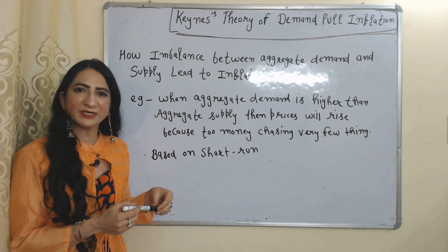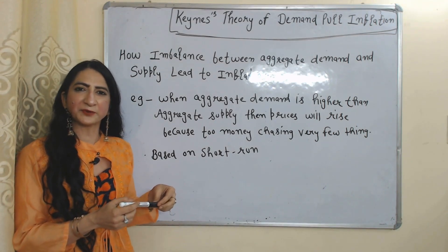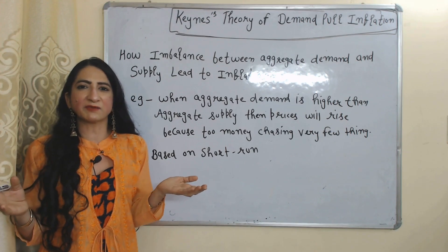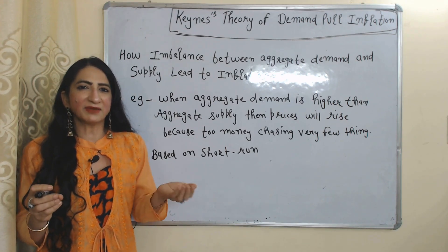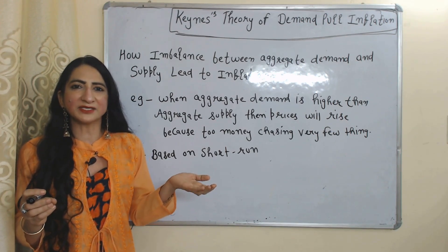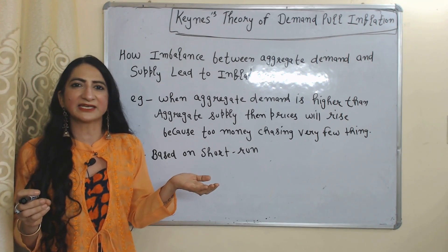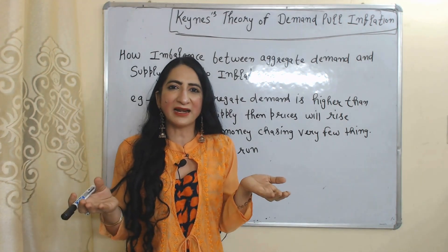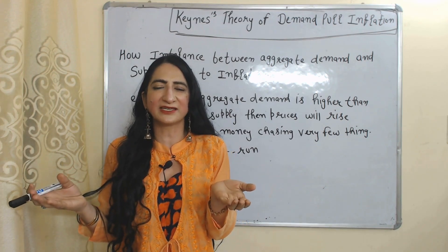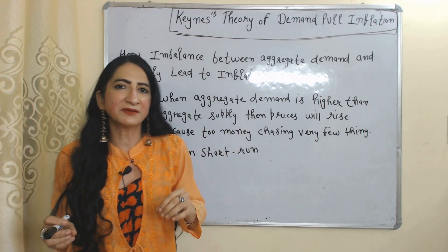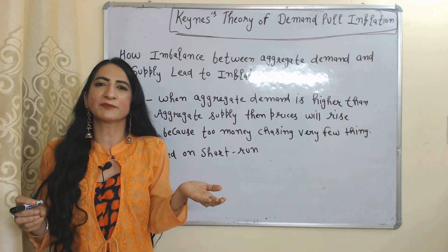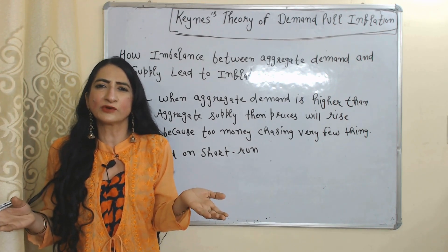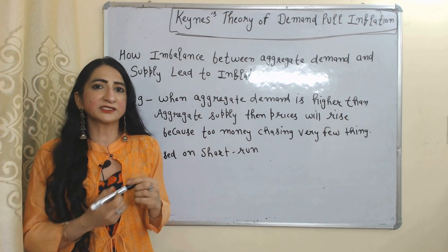Hello everyone, my name is Minister. I hope you all are staying healthy. Today we are going to talk about Keynes's theory of demand-pull inflation. This theory mainly explains how an imbalance between aggregate demand and aggregate supply creates inflation. When aggregate demand is more than aggregate supply, prices will rise because too much money is chasing very few goods in the market.